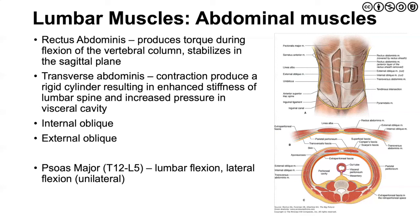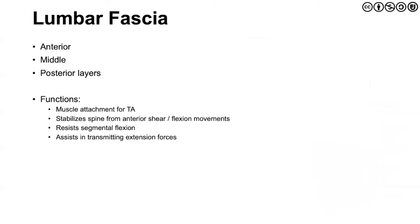Finally, we look at the lumbar fascia. There are anterior, middle, and posterior layers. It serves as a site of muscle attachment for the transverse abdominus. It additionally stabilizes the spine from anterior shear and resists segmental flexion. In doing so, it helps to transmit and distribute forces. The lumbar fascia is a really important structure in terms of providing more static stabilization to the lower spine.